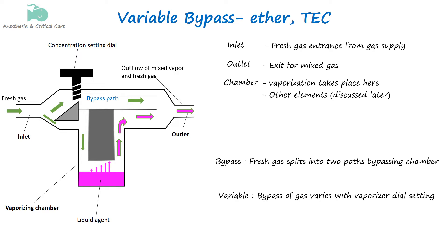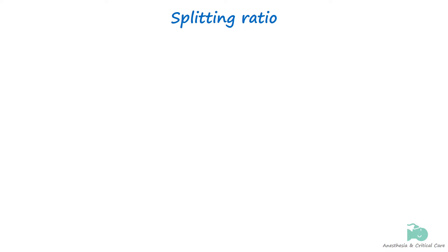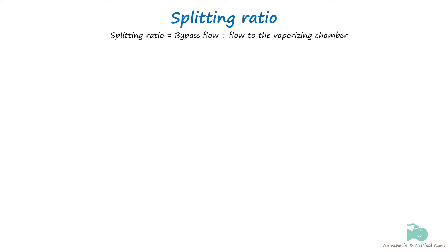For this reason, it is also called concentration calibrated. As we have seen, the variable bypass method splits the gas into two streams. The ratio of fresh gas flow bypassing the vaporizing chamber to the flow passing into the vaporizing chamber is referred to as the splitting ratio.